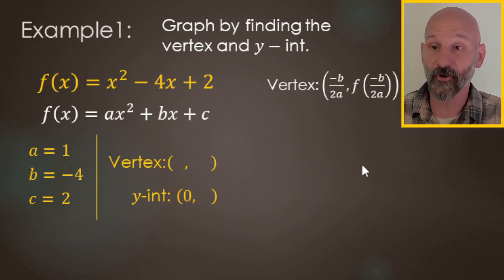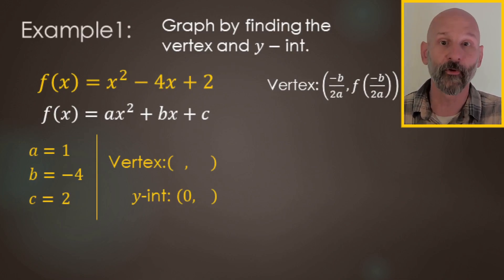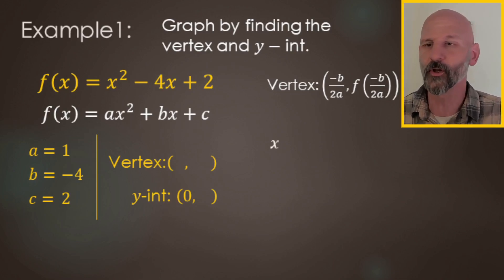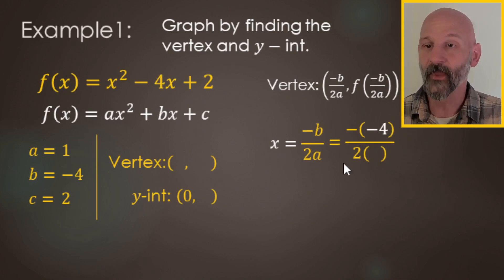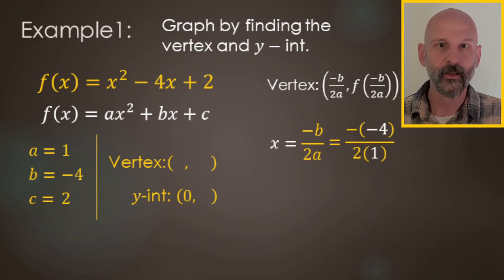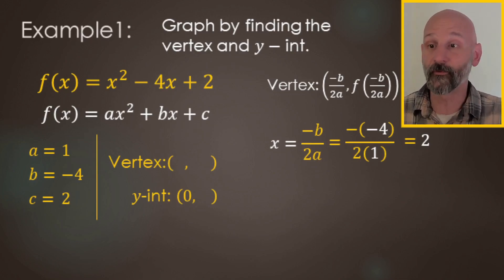For the vertex, the x value is negative b over 2a. We replace b with negative 4, giving us negative negative 4, and 2 times a = 2 times 1. Negative negative 4 is 4, and 2 times 1 is 2, so we have 4 divided by 2, which makes 2. The x value for the vertex is 2.